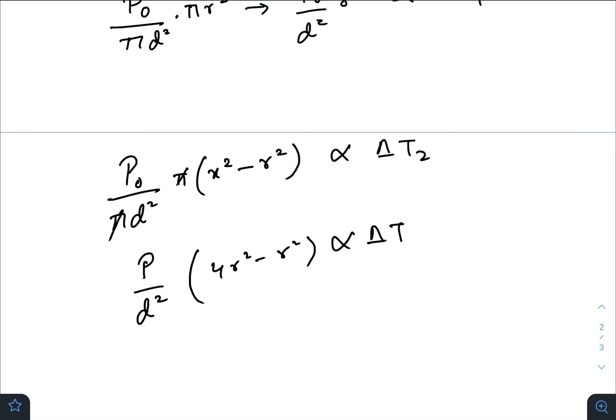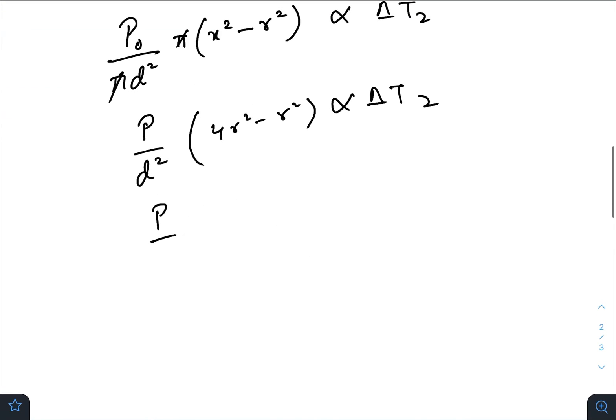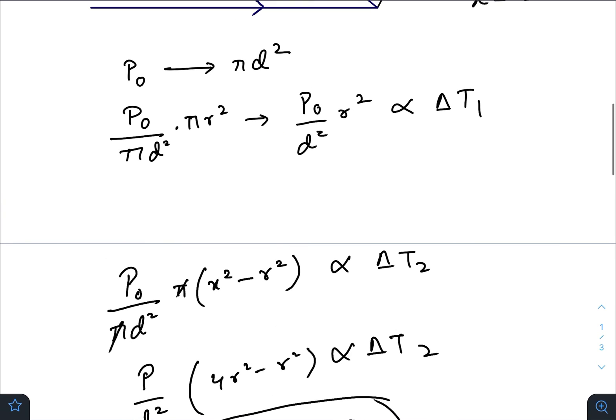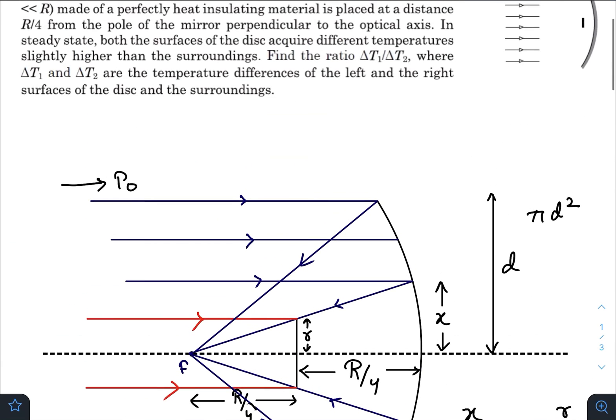So here you can write 4 r square minus small r square directly proportional to del t2. So P by d square times 3 r square directly proportional to del t2. Now we need to just find out the ratio of del t1 and del t2 according to our question.